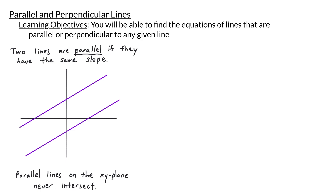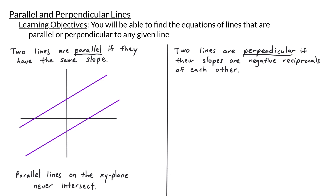Now let's talk about perpendicular lines. We say that two lines are perpendicular if their slopes are negative reciprocals of each other. The negative portion means that the two slopes have opposite signs, and reciprocals means that as fractions their numerators and denominators are flipped.